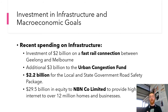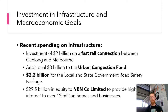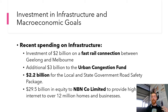Very recent infrastructure spending includes a $2 billion fast rail connection between Geelong and Melbourne, an additional $3 billion to the urban congestion fund to address traffic bottlenecks and level crossing removals, and a $2.2 billion local and state government road safety package — because safer roads with fewer accidents means greater efficiency. There's also $29.5 billion in equity to NBN Co to provide high-speed internet to over 12 million homes and businesses, which is especially important now that many people are working from home and need reliable internet.